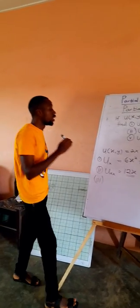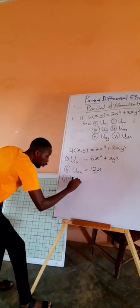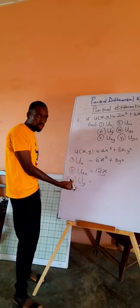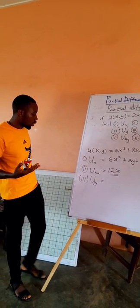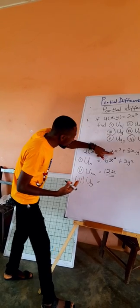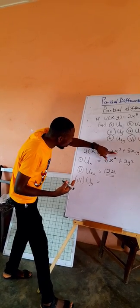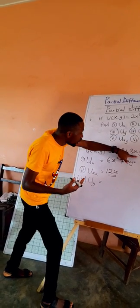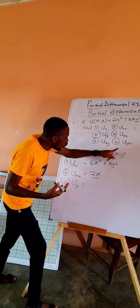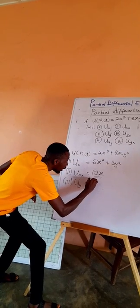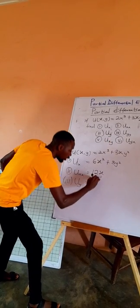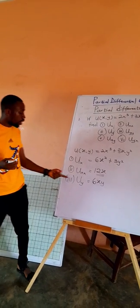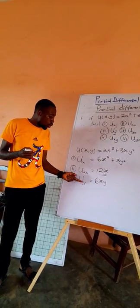Now the partial differentiation of U with respect to y — ∂U/∂y. In this case, our attention will be on y and x will be considered as constant. Looking at our function: there is no y in the first term 2x squared, so the whole of that is constant, giving 0. Then differentiating 3xy squared: we drop the exponent to multiply 3, giving 6. x is constant, so we write it as 6xy.